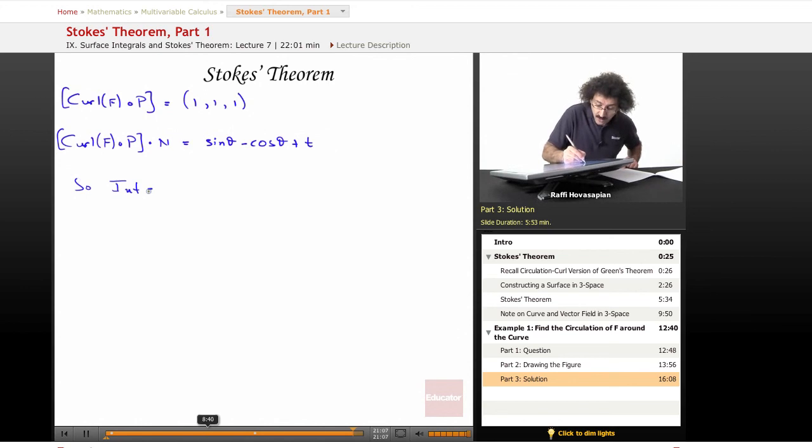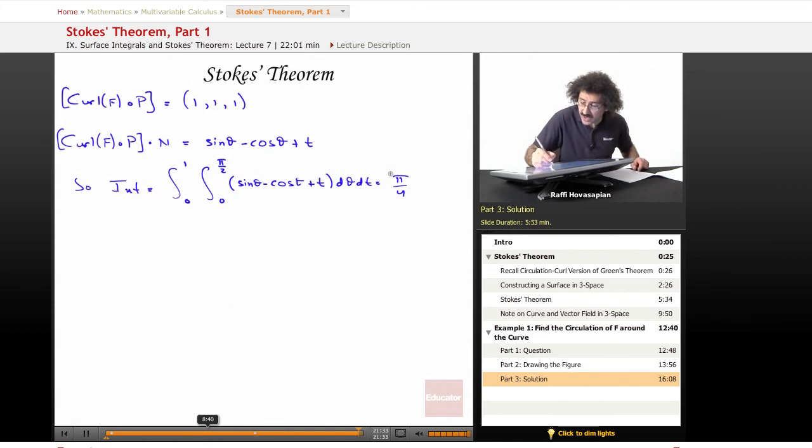The integral we're looking for has t from 0 to 1 and θ from 0 to π/2. The integrand is sin θ - cos θ + t. Integrating first with respect to θ, then t, our final answer is π/4.